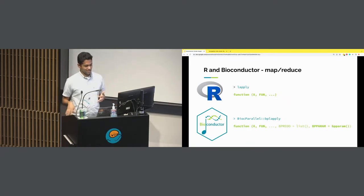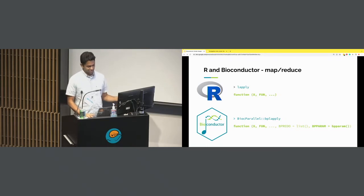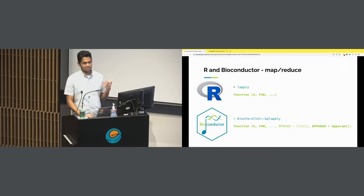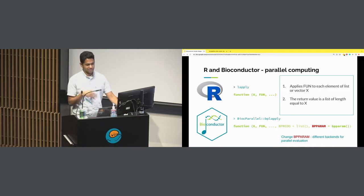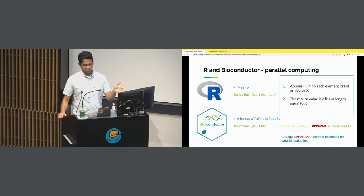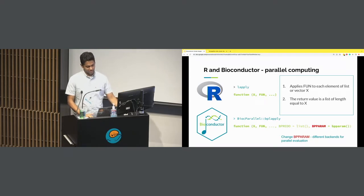In Bioconductor, we have a package called BiocParallel, which essentially does the same thing. The function is called bplapply, and the only difference is there's an extra argument called BPPARAM. You can change the type of parallel computing backend being used when you use the bplapply command. You apply a function to each element of a list or vector X, and the return value is also a list of the same length as the input. You can change BPPARAM for different backends for parallel evaluation.